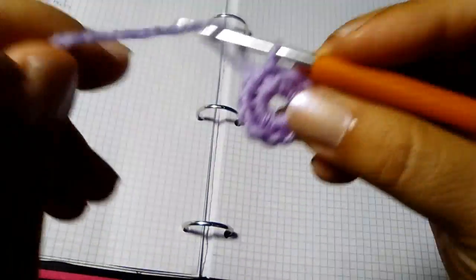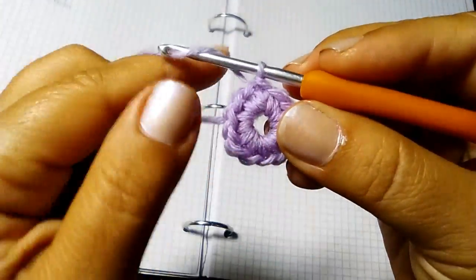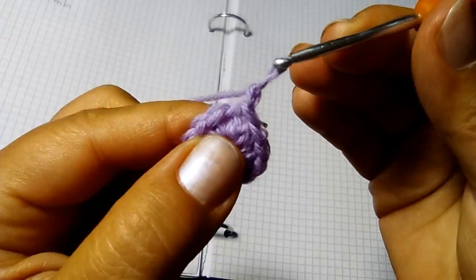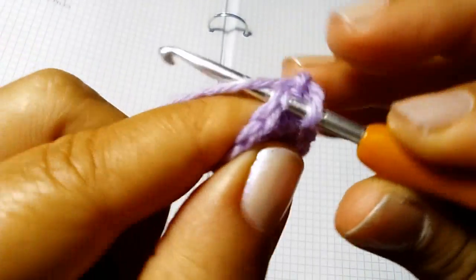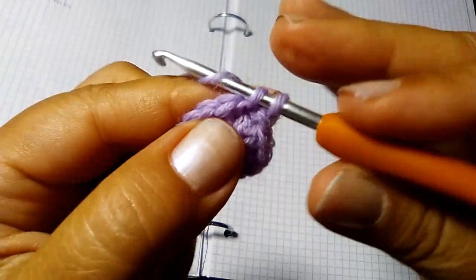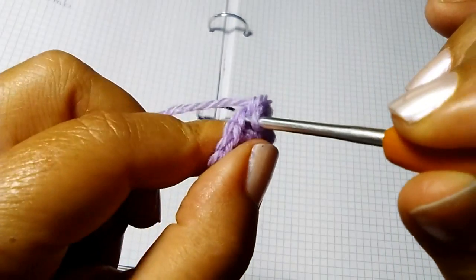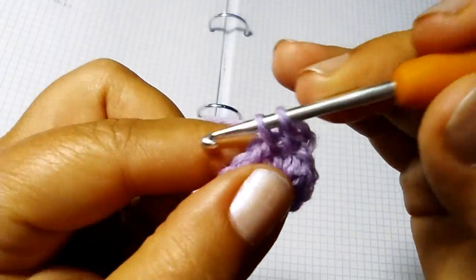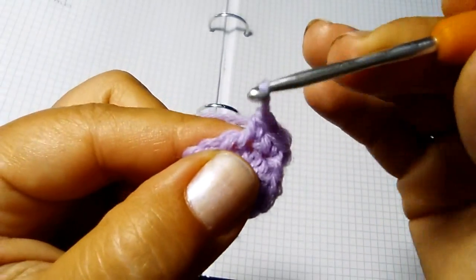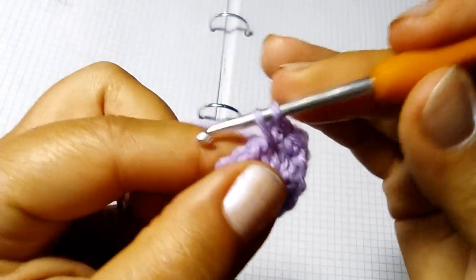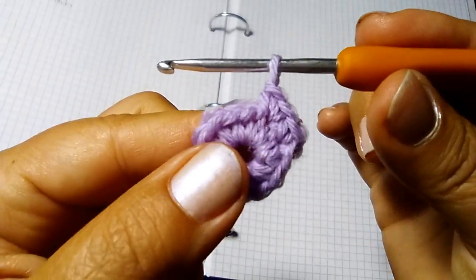Giro numero 2: una catenella, rientro nella stessa maglia per fare una maglia bassa.